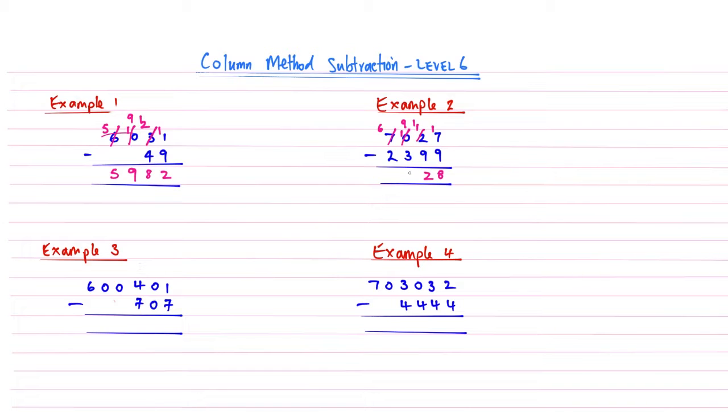9 subtract 3 gives me a 6, and then 6 take away 2 gives me 4. That gives me 4,628. I'm going to tick both of these. Taking each digit in turn really does ensure that you don't make any mistakes.